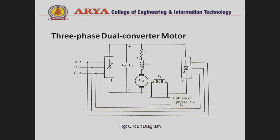For reversing the polarity of motor-generated EMF for the regeneration process, the field circuit must use a single-phase or three-phase full converter. Converter one is operated at firing angle alpha1, and converter two is operated at firing angle alpha2. For the circulating-current type dual converter, the sum of both converter firing angles is equal to 180 degrees: alpha1 + alpha2 = 180°.